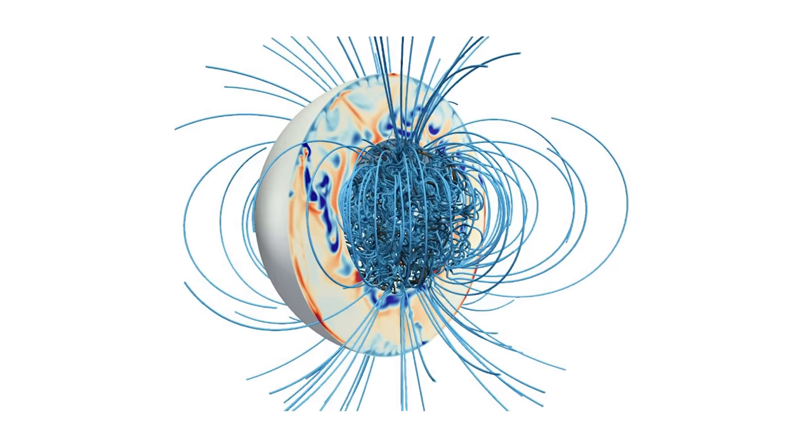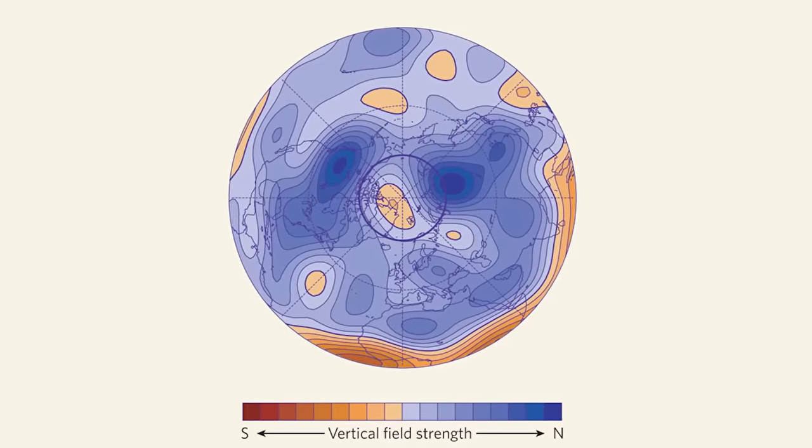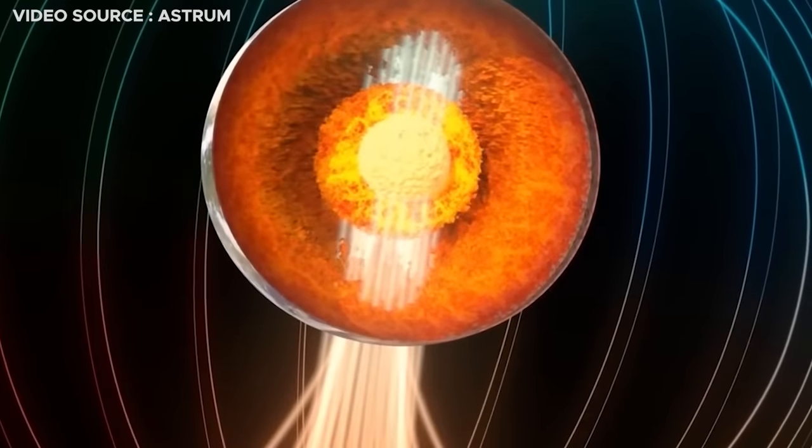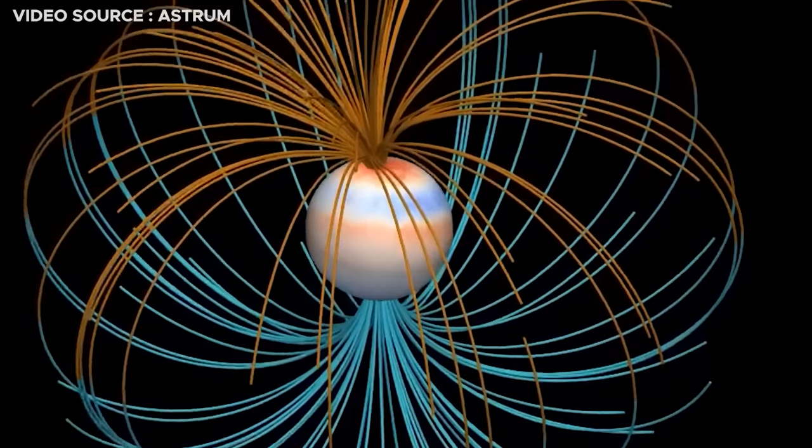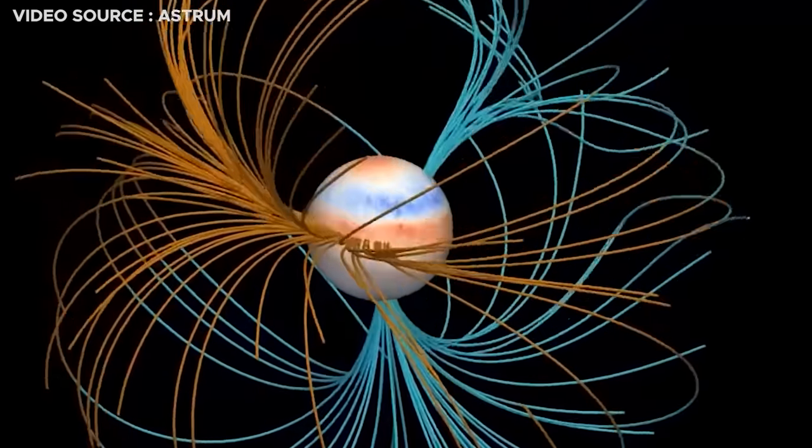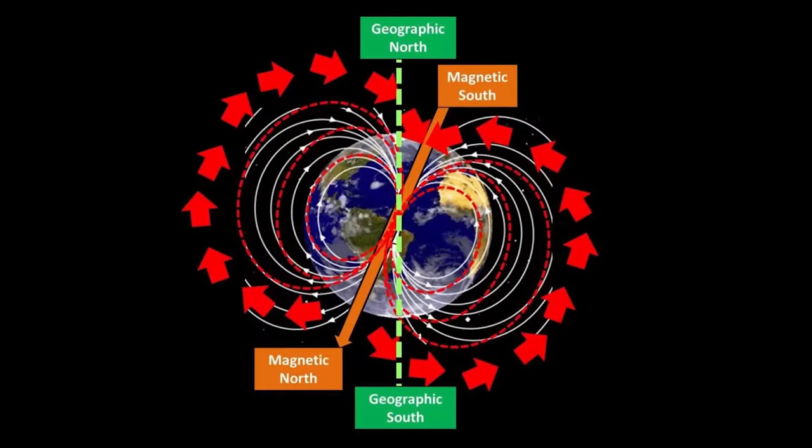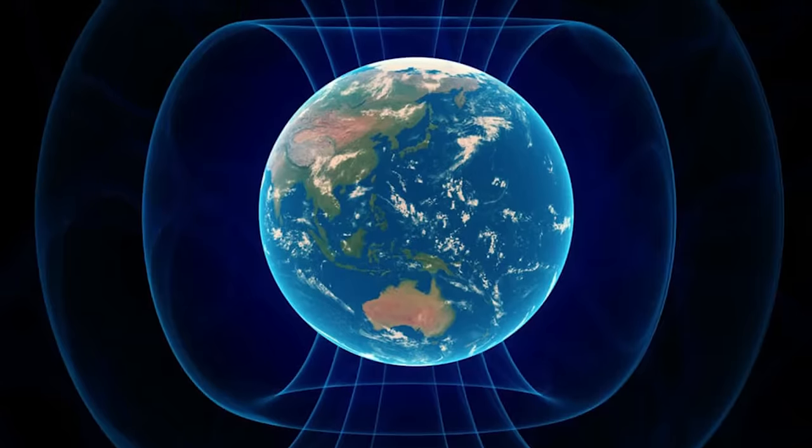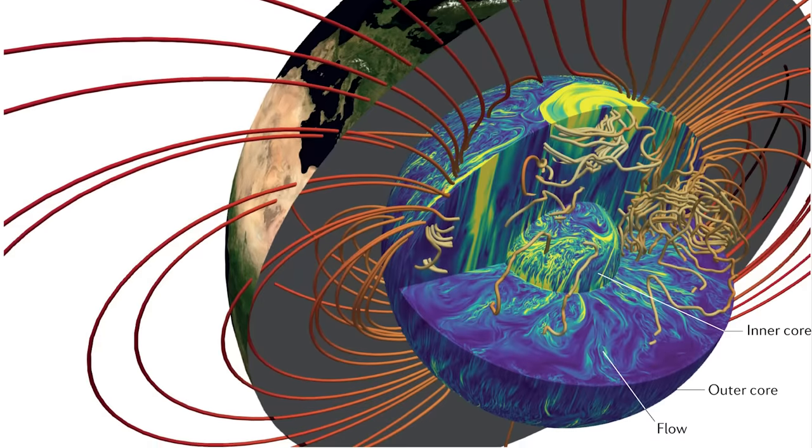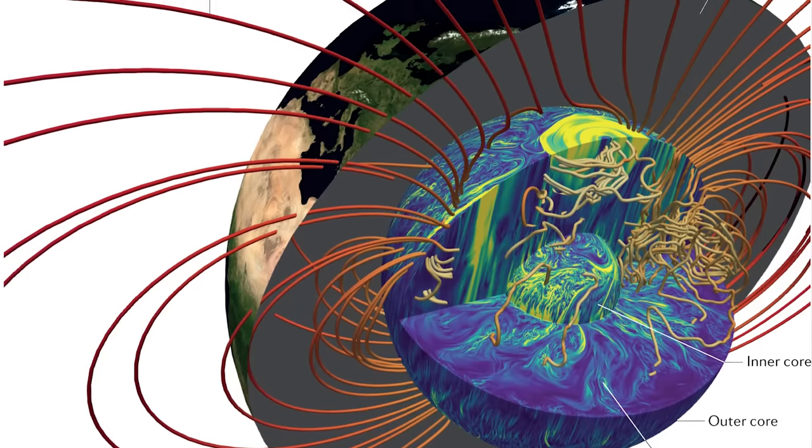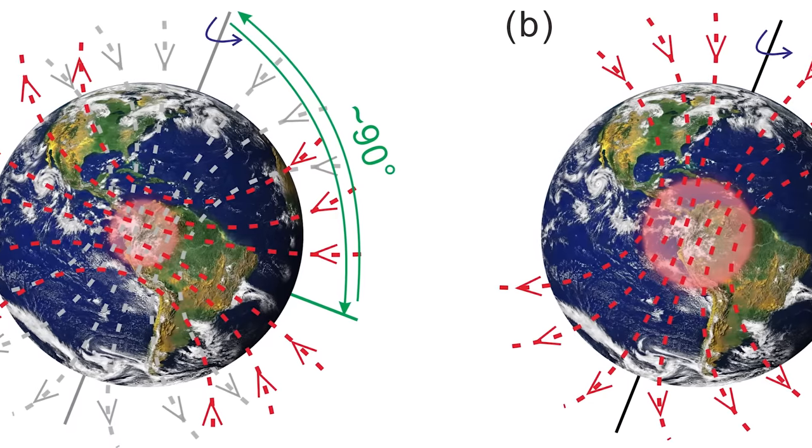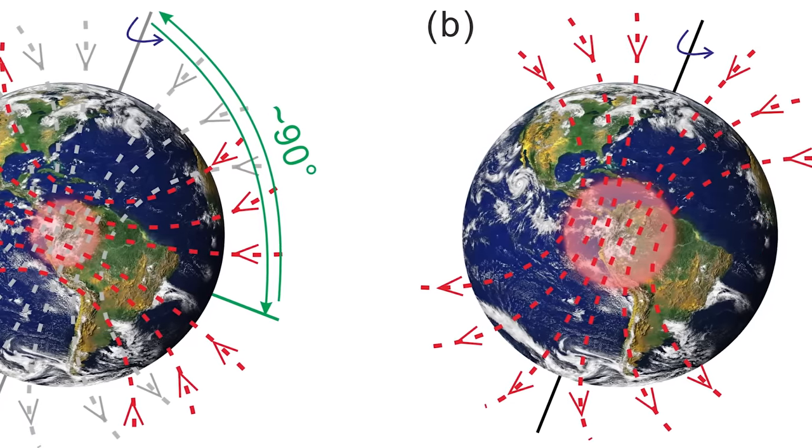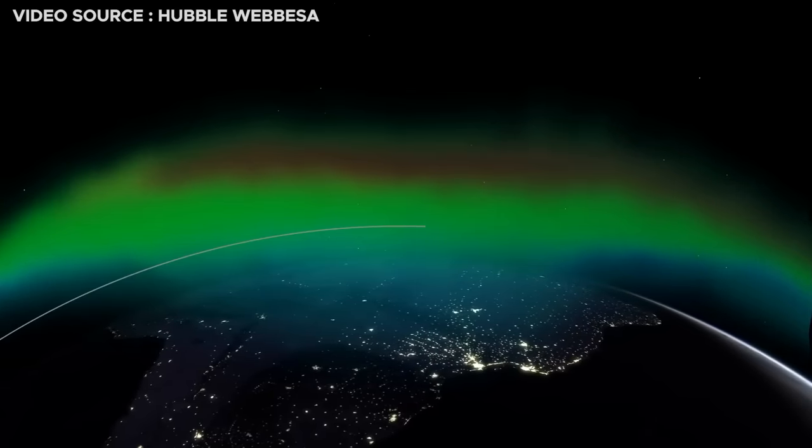Geomagnetic reversals are a regular occurrence in Earth's history. However, what deviates from the norm is the speed and nature of the ongoing changes. The swift weakening of the magnetic field, the expansion of the South Atlantic Anomaly, and the accelerated movement of the magnetic poles all suggest the possibility of a geomagnetic reversal occurring much sooner than initially anticipated.